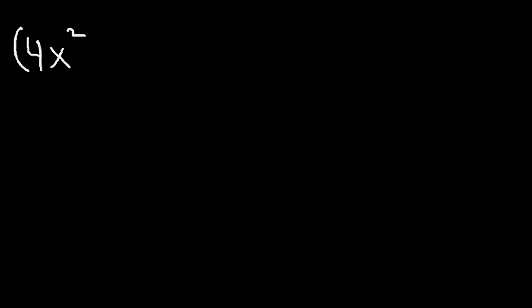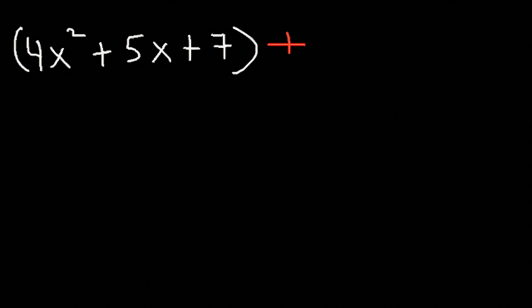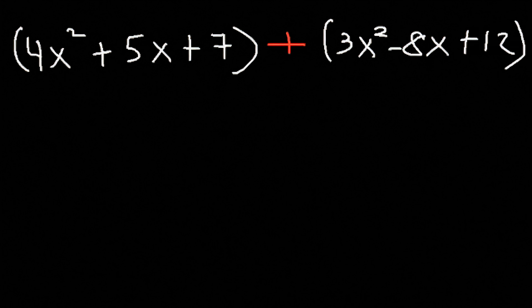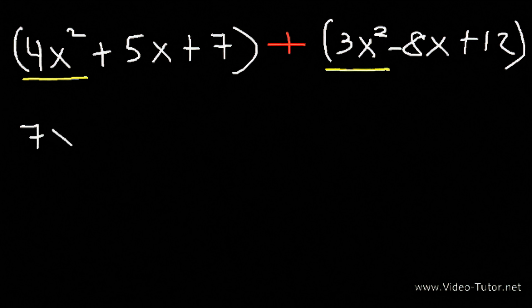Let's say if we have 4x squared plus 5x plus 7 plus 3x squared minus 8x plus 12. So how can we add these two polynomial expressions? Feel free to pause the video and work out this example. What we need to do is combine like terms. 4x squared and 3x squared are like terms, so 4 plus 3 is 7 — that gives us 7x squared.